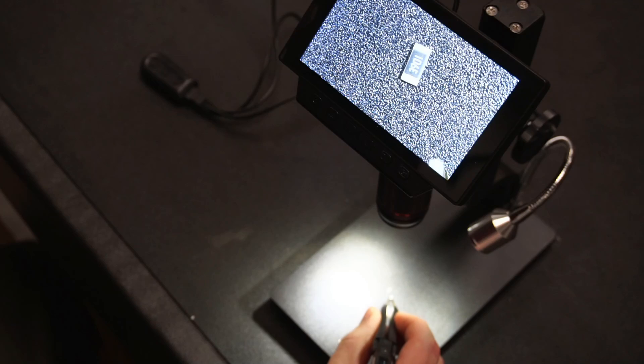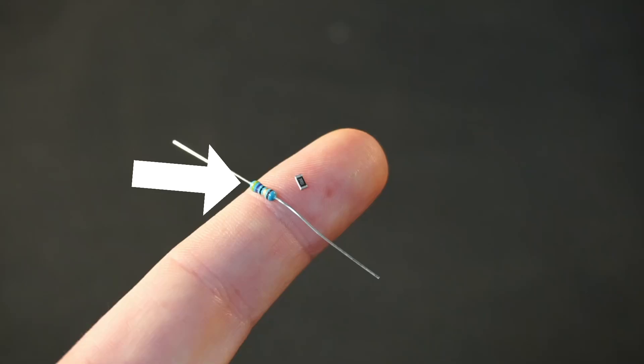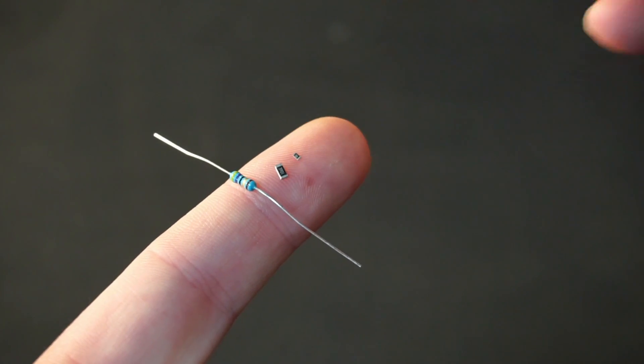SMD components come in many different packages and sizes. Some are relatively large and easy to work with. However, the smallest SMDs are so small they're literally one sneeze away from being blown into the next postcode.